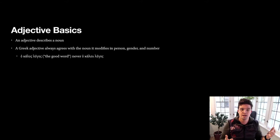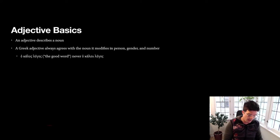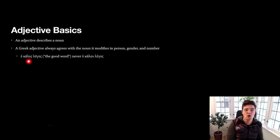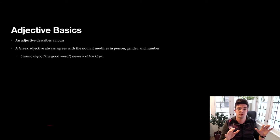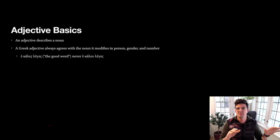One example: ho kalos logos, 'the good word.' In both of these words, kalos and logos are nominative masculine singular, and you'll notice their endings look like one another. That will often be the case — an adjective's ending will look like the ending of the noun it's modifying — but it will not always be the case. There may be discrepancy in the way that the endings of an adjective and a noun look, but that doesn't mean they do not match in case, gender, and number.